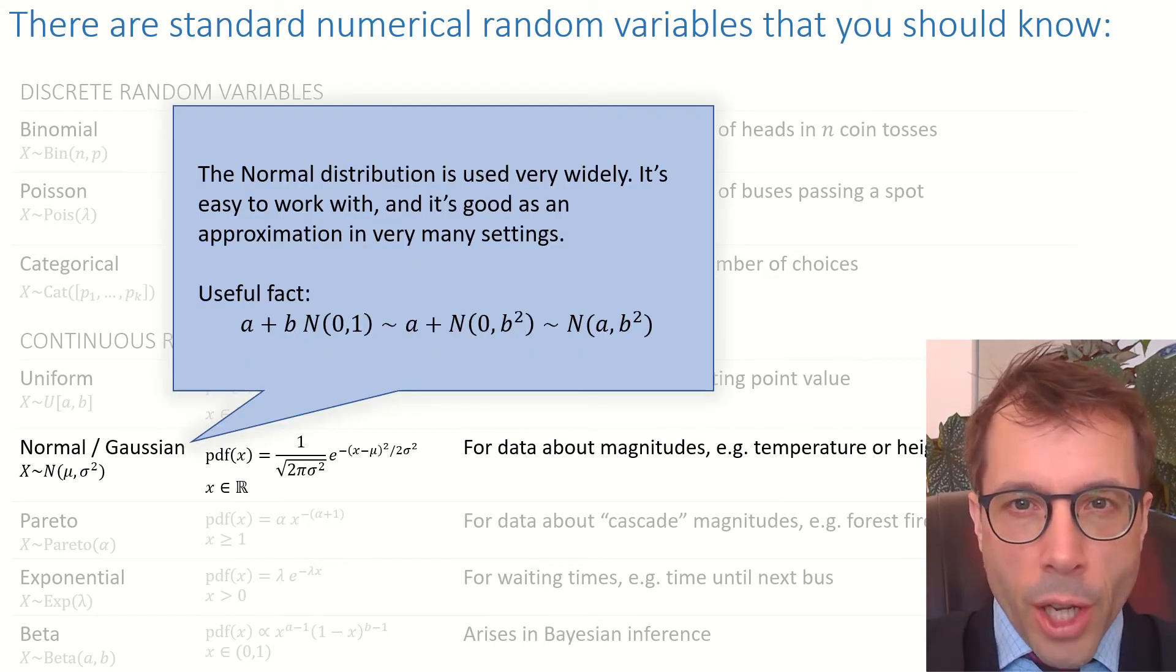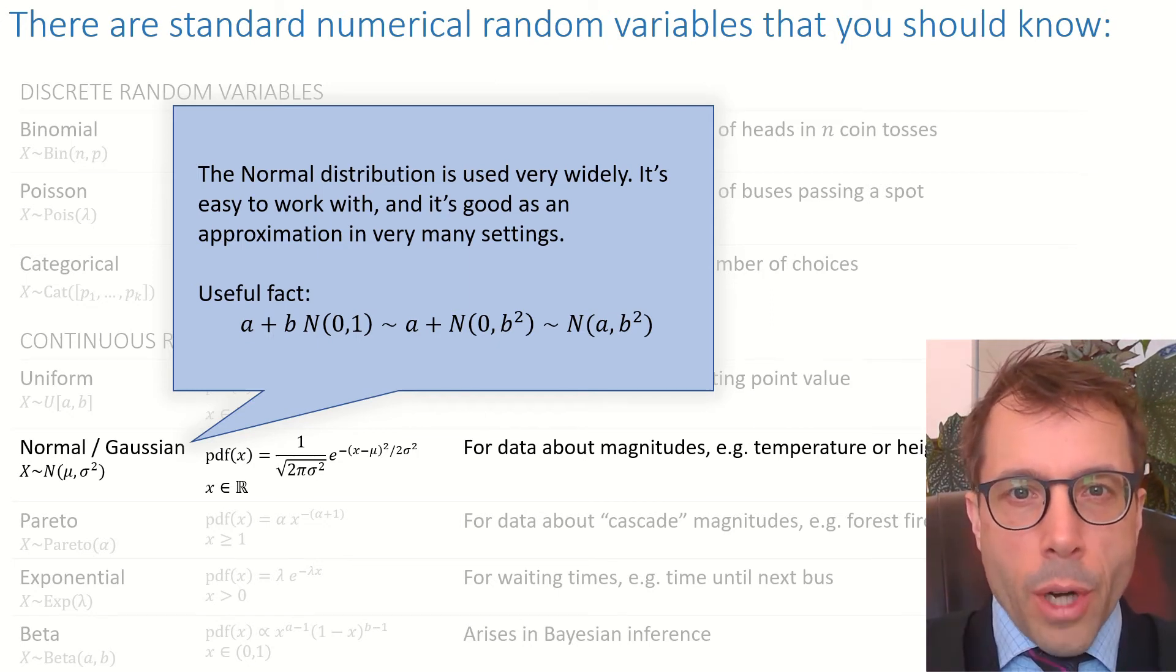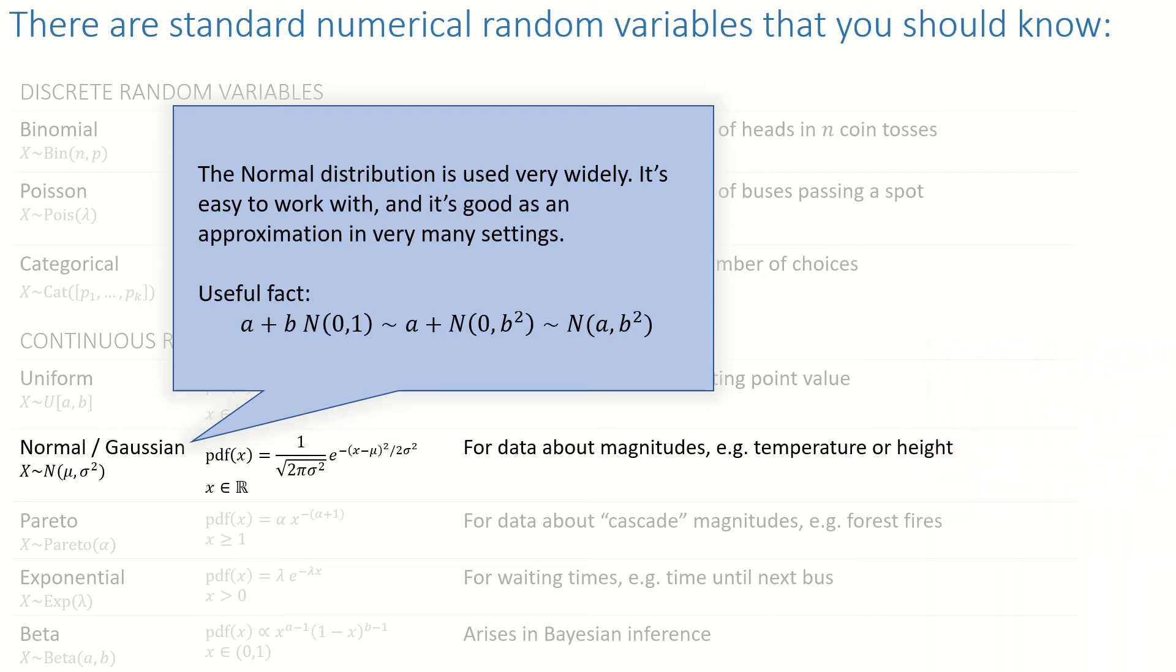If you take a Normal and you add a constant and scale it, you end up with another Normal, just with different parameters. Pause the video here and read how this works.